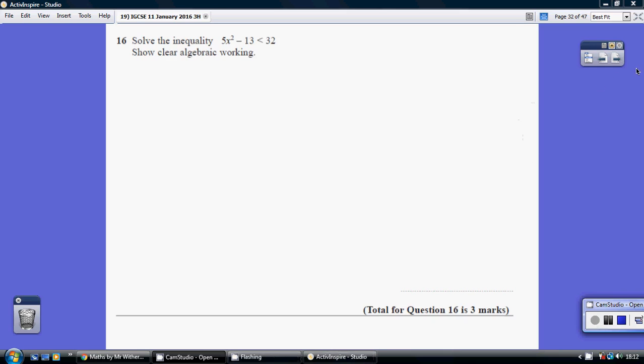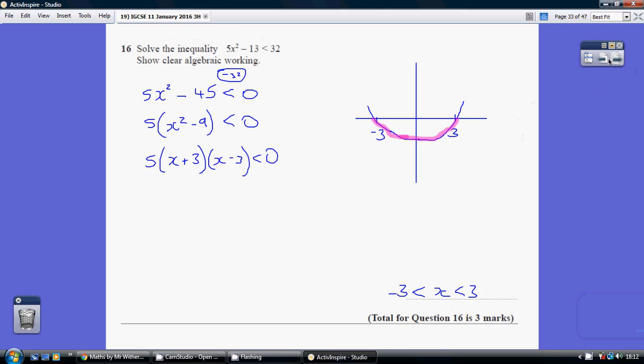Question 16. So we've got to solve this inequality. Start off by making it less than 0. So we'll choose to take away 32 from both sides. So we get 5x squared minus 45 is less than 0.